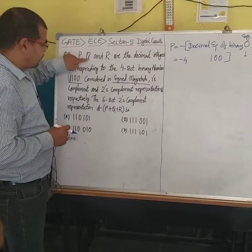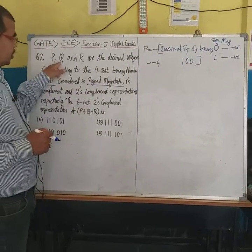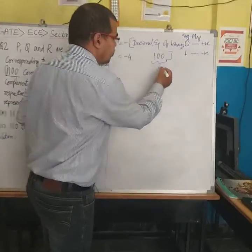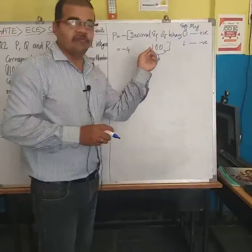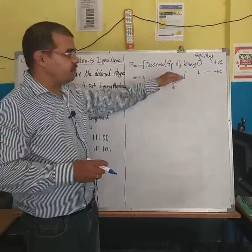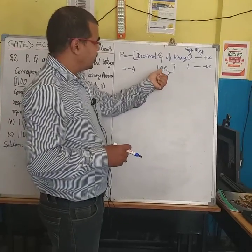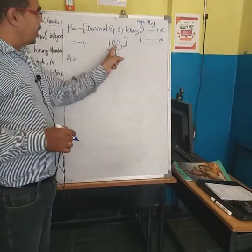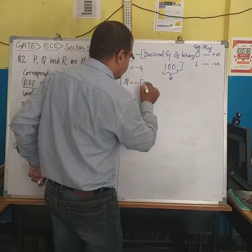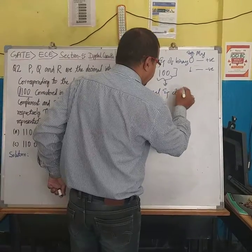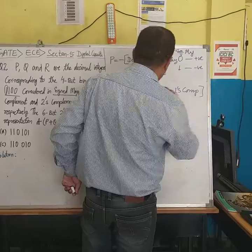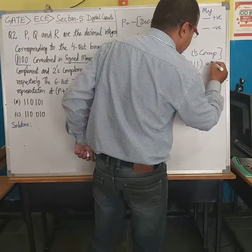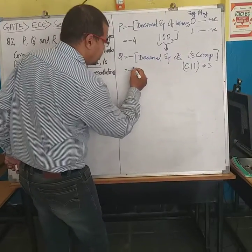Q is the decimal integer in 1's complement representation. In 1's complement, wherever we have 1, we replace it with 0, and wherever we have 0, we replace it with 1. The sign bit of 1100 is 1, so the number is negative. The remaining bits 100 in 1's complement become 011, which is 3 in decimal. Therefore, Q is minus 3.